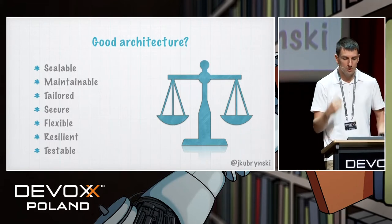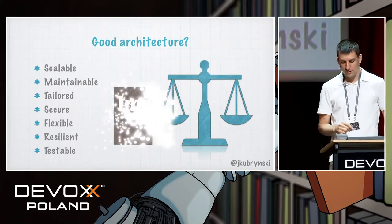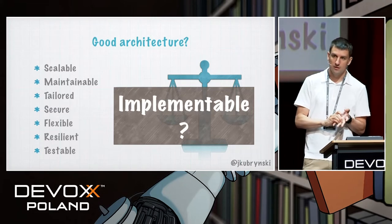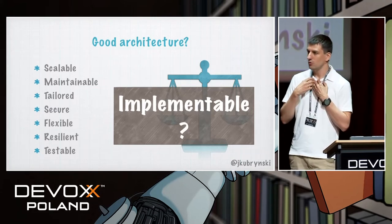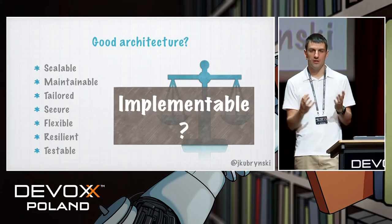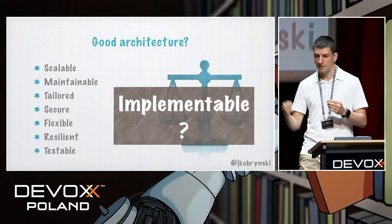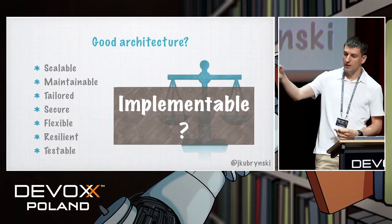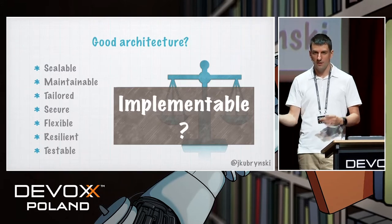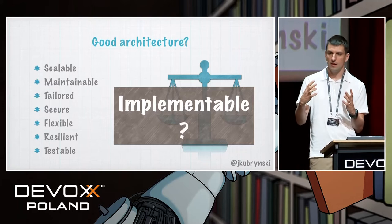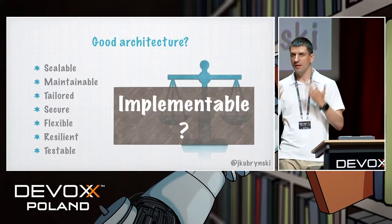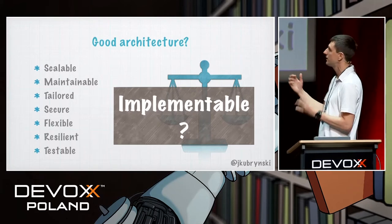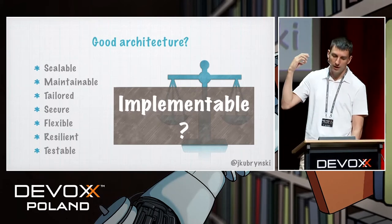Another important missing feature is that architecture should be implementable. I can create a brilliant architecture that integrates in a transactional way between an FTP server, an HTTP application, and a hard drive — it looks great on the whiteboard. However, you cannot implement it. The biggest issue, and the most important feature of architecture, is that it should be implementable.